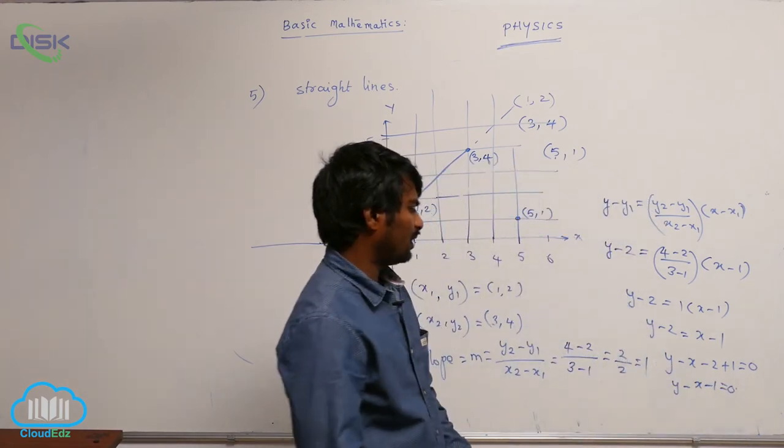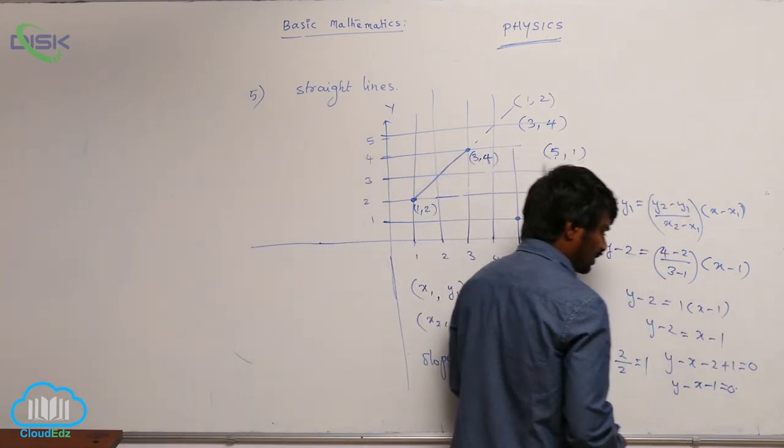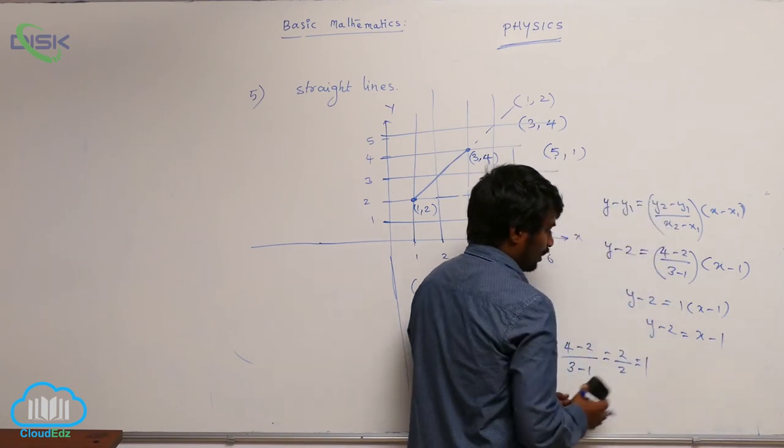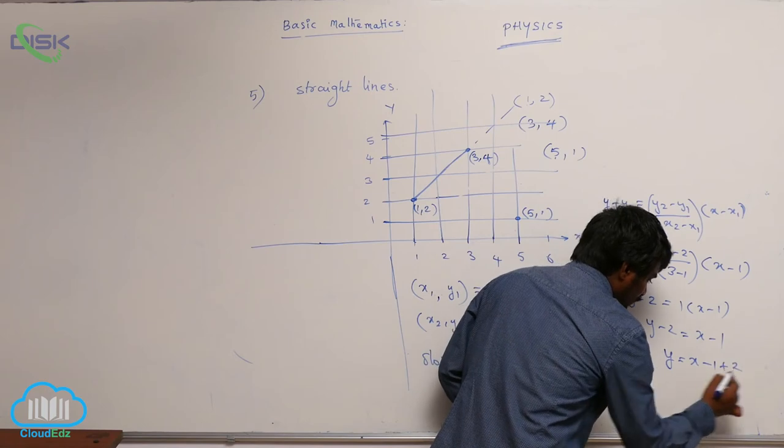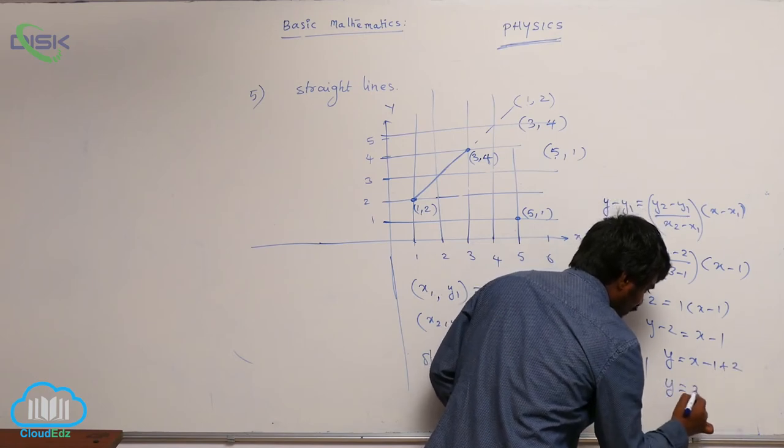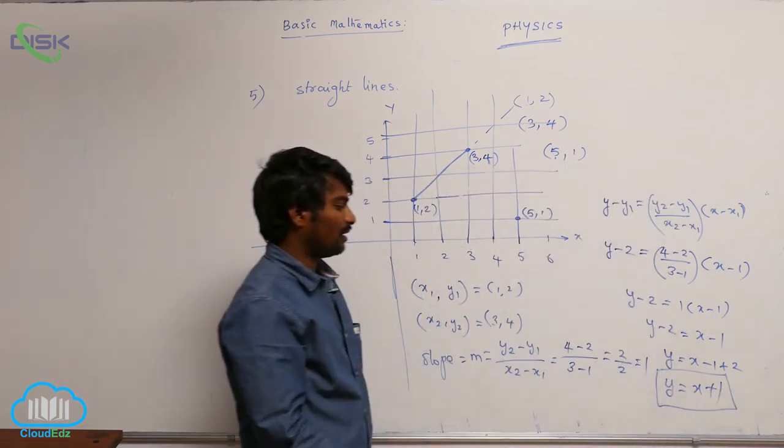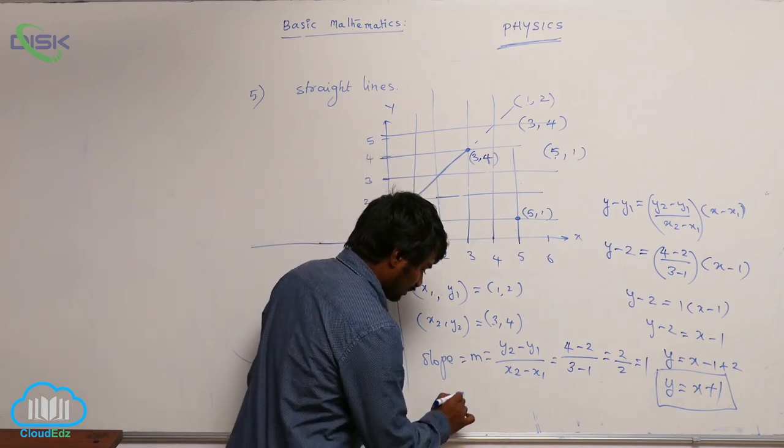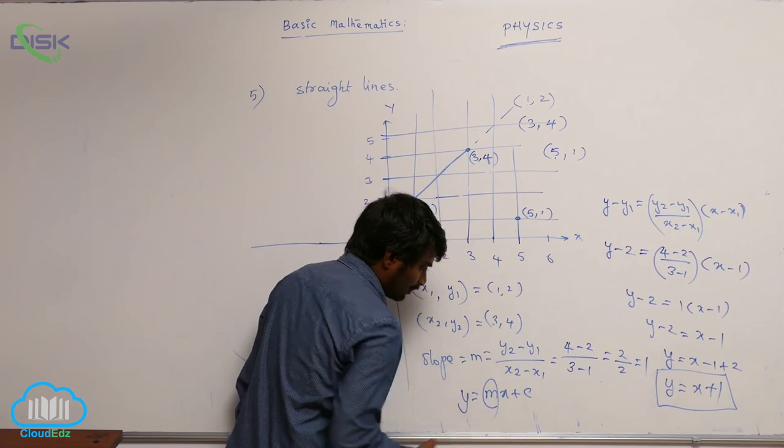Straight line equation, or somebody prefer to write x and the constant on one side, y on other side. So you can write like this: y is equal to x minus 1 plus 2. So what you are going to get? y equal to x plus 1. This is the straight line equation, and generally you represent a straight line equation like y equal to mx plus c. m gives the slope.